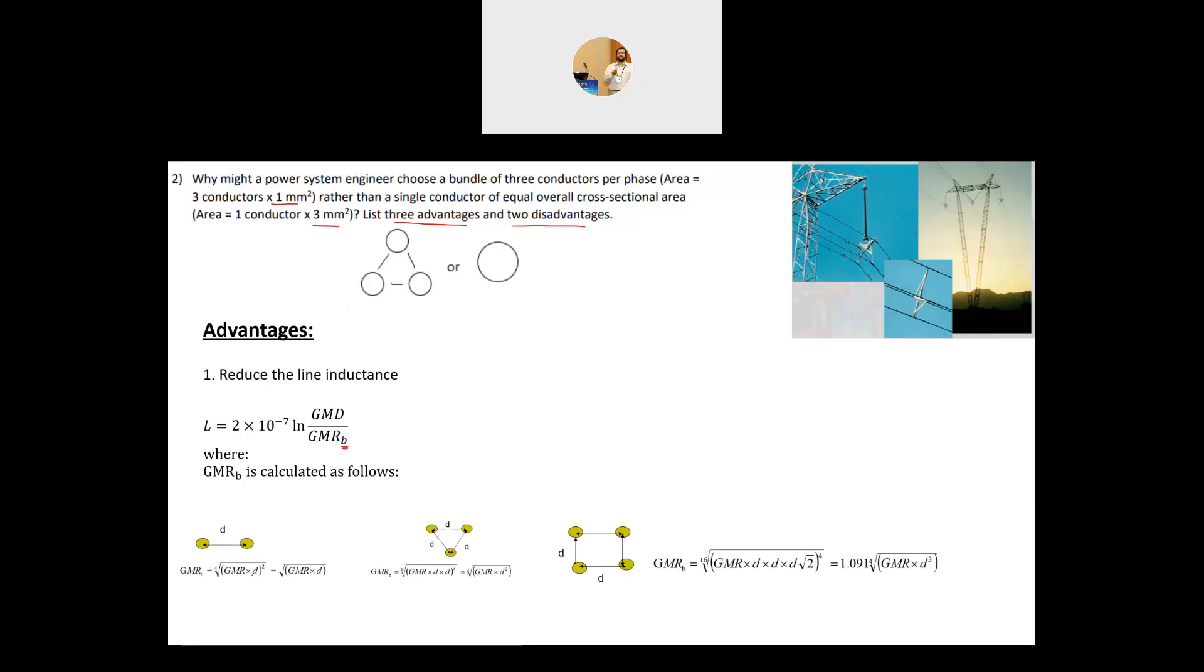And this GMR basically is for the configuration within the phase and this GMR will have different formula. So if you have a bundle of two, it's equal to the GMR, the geometric mean radius, it's close to the radius of the conductor, but it's a little bit different. There are usually some tables you can get that and D is the distance between the bundle and D usually is much larger than the GMR. So that quantity is larger than only the GMR. So basically the GMR will increase and this will lead to the decrease in L and you can see here this is the GMR for three conductors and here for four conductors. So every time you see the value here, it is always larger than just a single conductor.